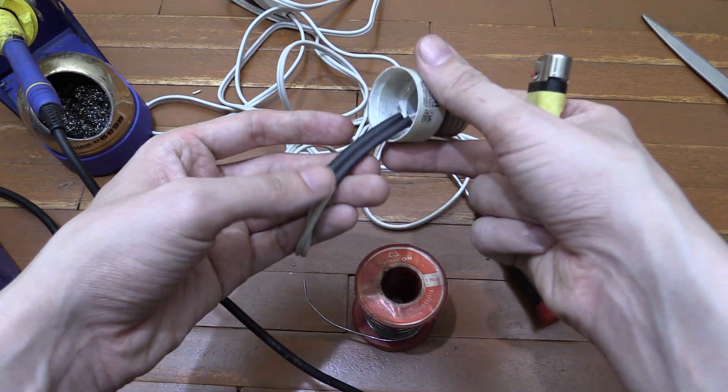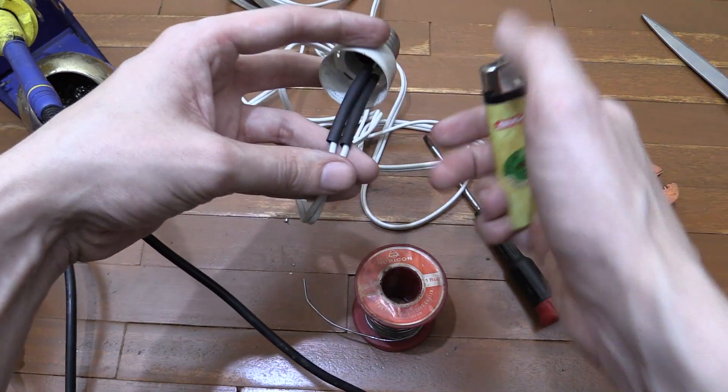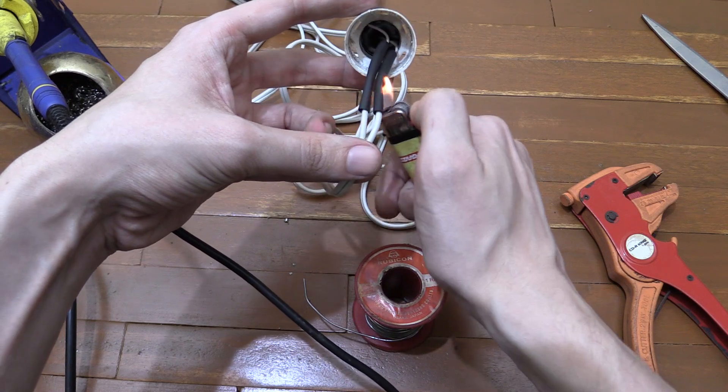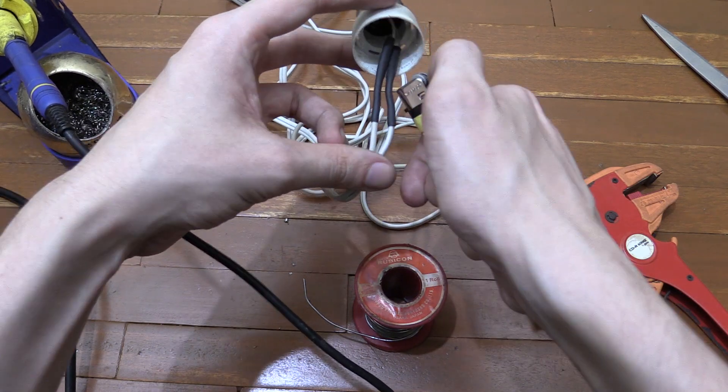So now my heat shrink tubing is over here. All I have to do is use a lighter to make it shrink and cover those connections. And this will make sure that they don't short out against each other and I don't touch them by accident.